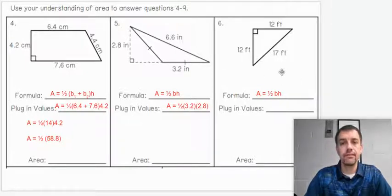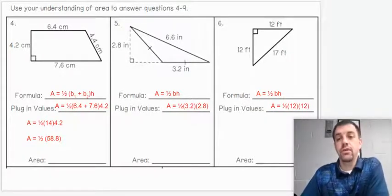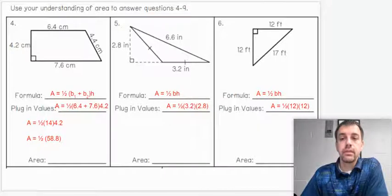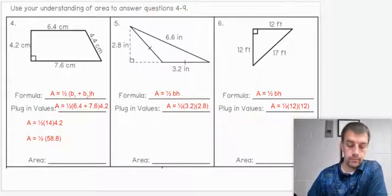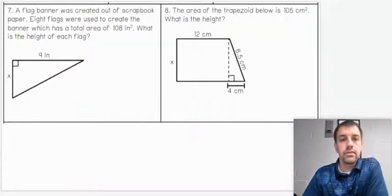Alright, number 6, same formula. We're still using a triangle. This one's a little bit easier to see. Hopefully you figured out we don't need the 17 here. We are going to multiply 12 times 12. Hopefully you know that 12 times 12 is 144. So if we divide that by 2, your answer should be 72 feet squared.